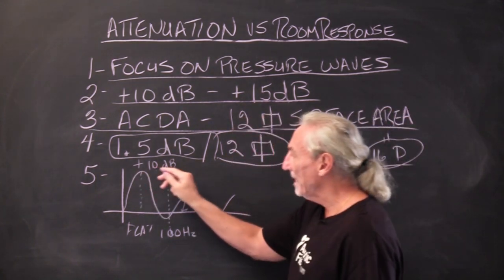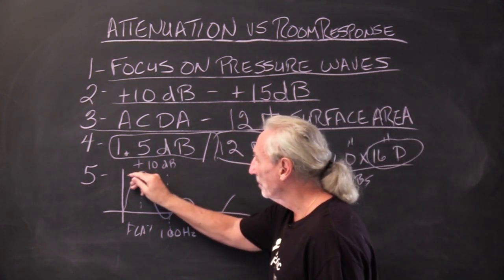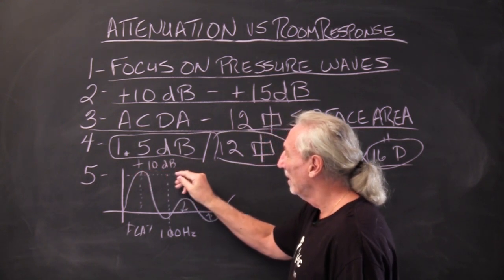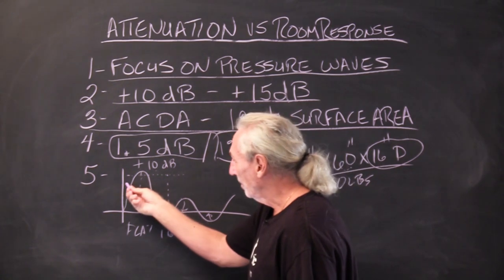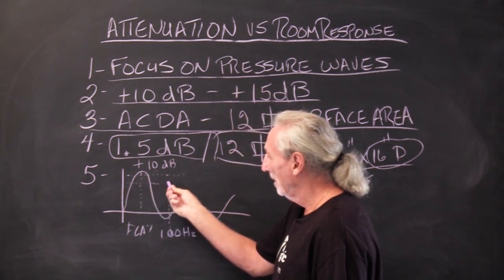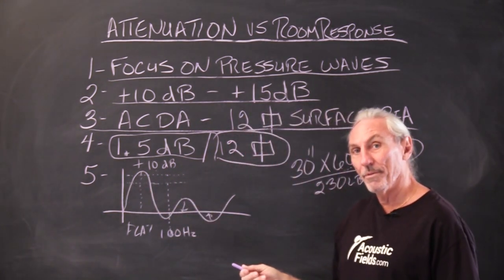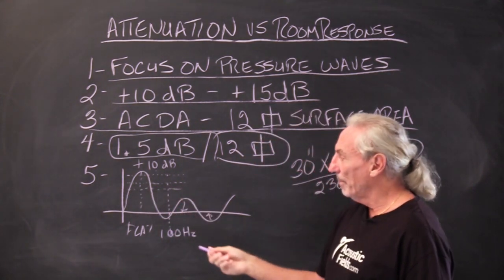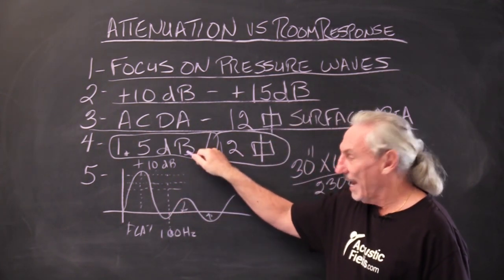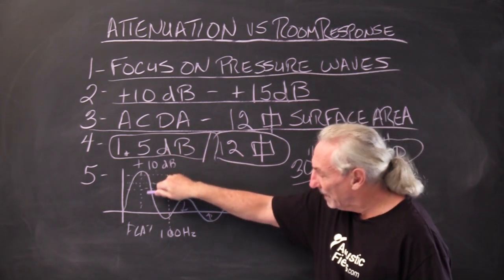So what do we do? We have a 10 dB bump. So we use one unit. We get to take a little bit off. Right? So we use two units. We take another 1.5 dB. Three units. Another 1.5 dB. So as we add units, we reduce our peaks.